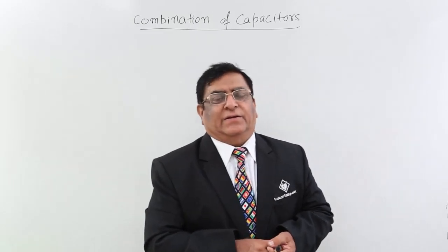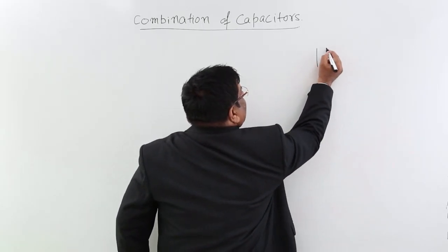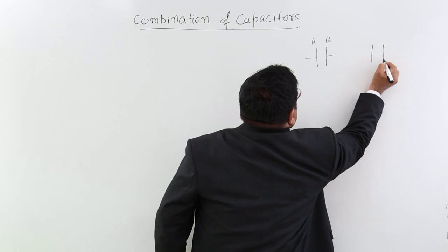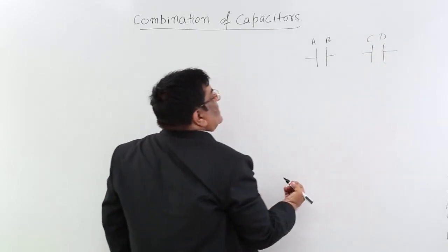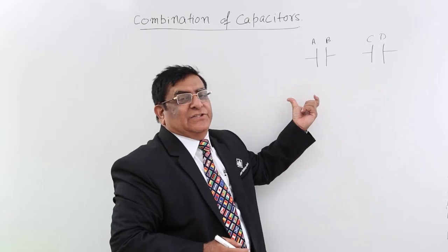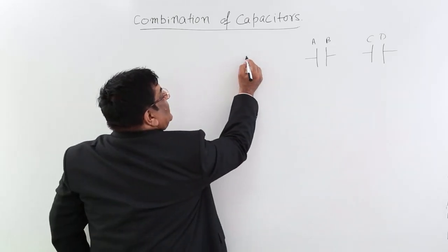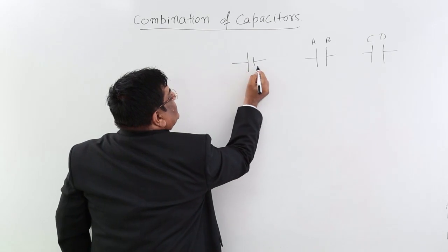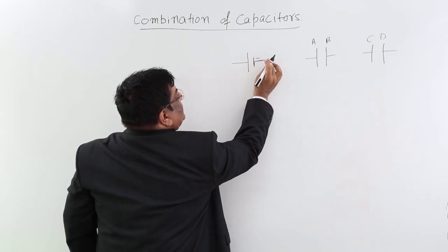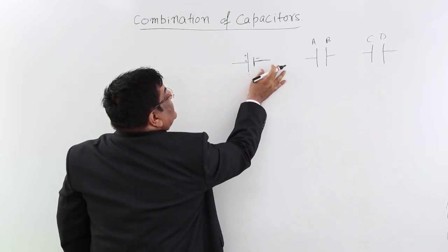Basically we can combine capacitors in two manners. Consider one capacitor with plates A and B, and another capacitor with plates C and D. When we want to give charge to them we have to connect them with a charge-giving energy source, that is a battery. We will use this symbol for the source of energy — the battery. From one plate it gives negative charges — electrons — and the other gives positive charges, and there is a potential difference between the two plates.